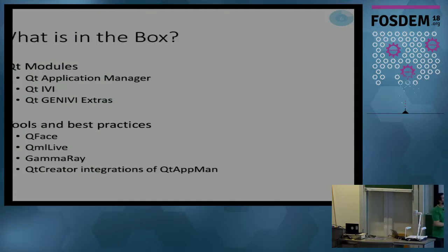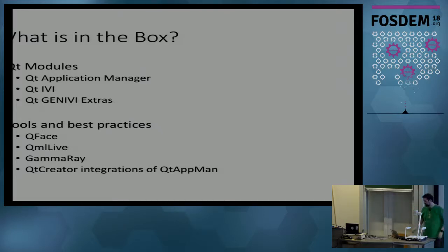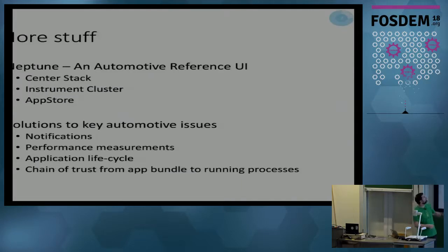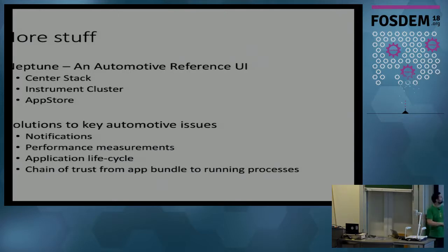What's in this extra box? We have a number of Qt modules: the Application Manager, something called Qt IVI, and a Genevi module, plus some tools around these. We also have an example called Neptune, which is a reference UI containing both the center stack — what used to be the radio — and the instrument cluster, the dials in front of the driver. It also has a very naively implemented app store, just to show that we can be app-oriented and download apps independently onto the systems.